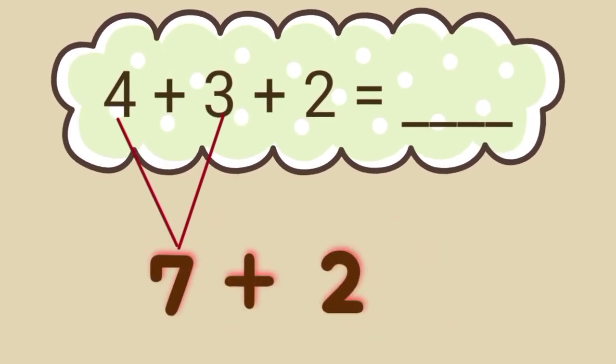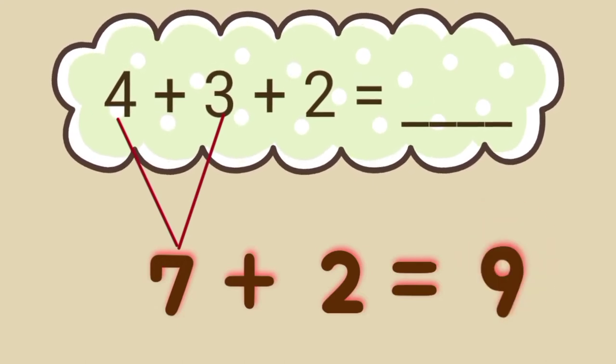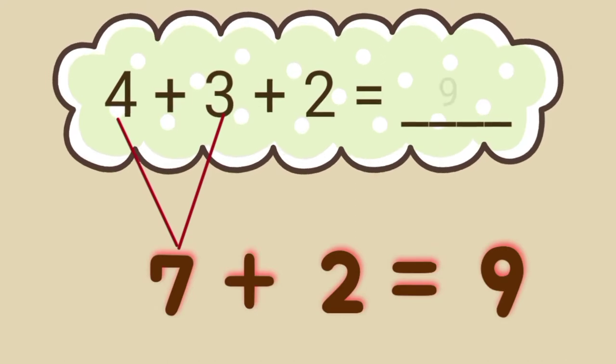Then we add 2. 7 plus 2 equals 9. So 4 plus 3 plus 2 equals 9.